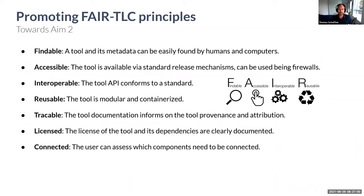Here are the properties we want NLP Sandbox tools to have, based on the FAIR standard — tools should be Findable, Accessible, Interoperable, and Reusable. In addition, three others are mentioned in the CD2H project: traceability (documentation should inform on tool provenance and attribution), licensing (easy access to the licenses of tool dependencies), and transparency (users should be able to identify what components need to be installed before deploying a tool).